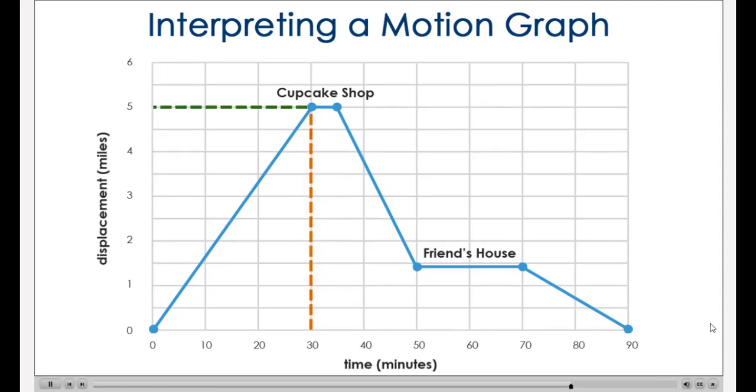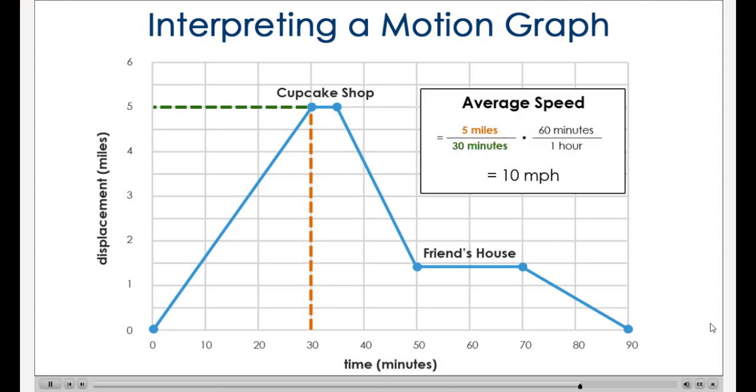We already calculated the speed from your house to the cupcake shop to be 10 miles per hour. How does that relate to the motion graph? Look at the average speed calculation, displacement over time. This is simply the slope of the portion of the graph representing the segment of the trip from your house to the cupcake shop.